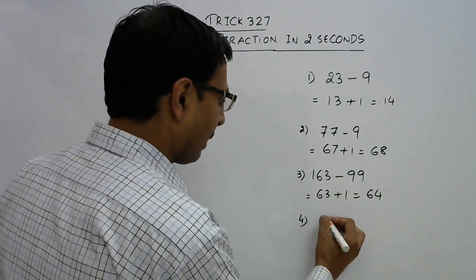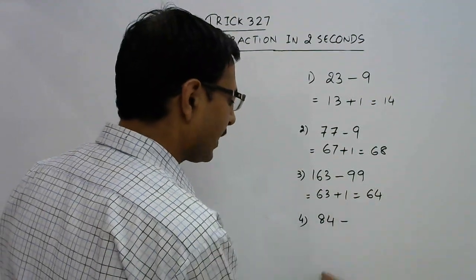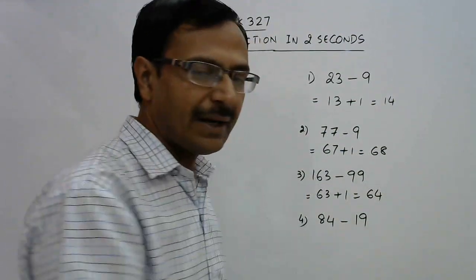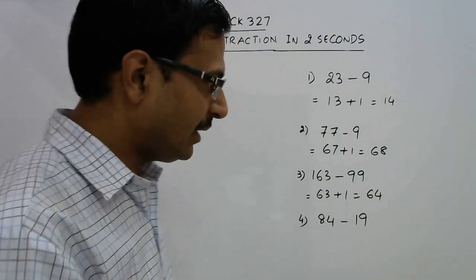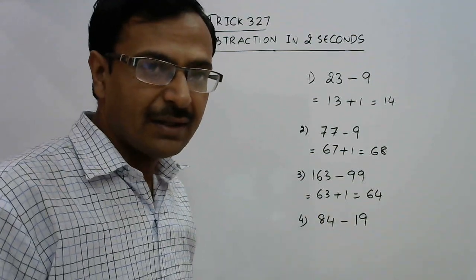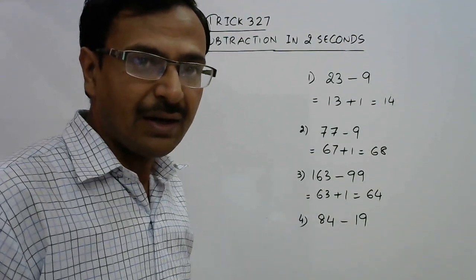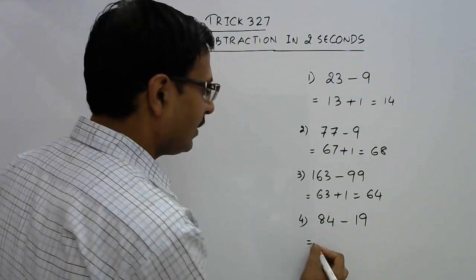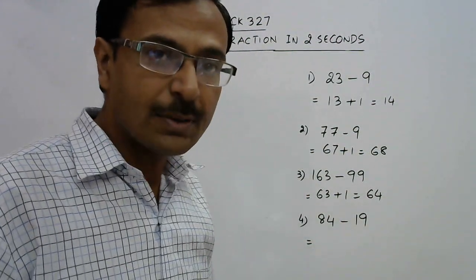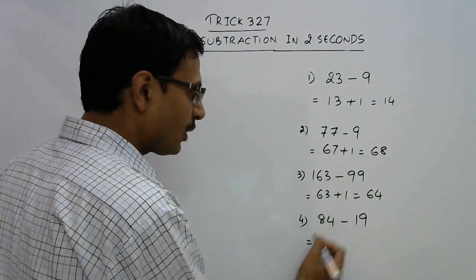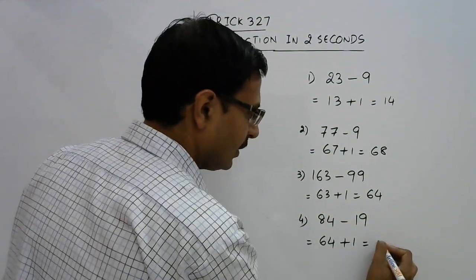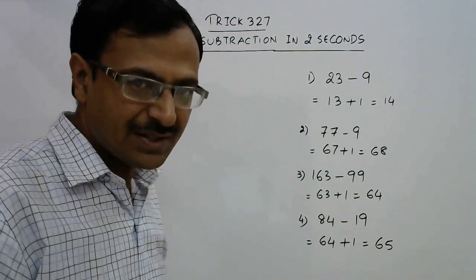Suppose we have 84 and we need to subtract 19. These are questions where students normally write the quantities one below the other, take carry from the tens place, and then find the difference. If children are taught this mental subtraction method, subtraction can be a fun and very easy process. Children should be told that 19 is close to 20, so instead of subtracting 19, subtract 20. So 84 reduced by 20 becomes 64, and add 1, you get 65 as the answer.